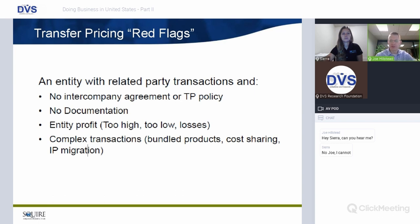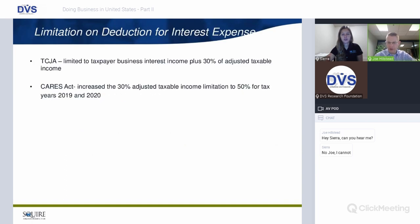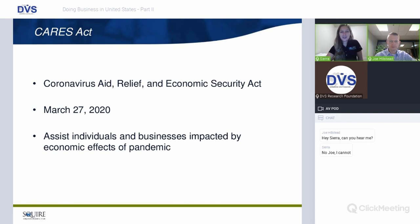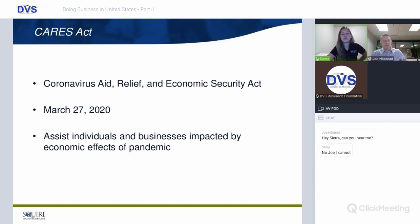In the interest of time, we're going to skip the detailed GILTI, BEAT, and CFC sections and move to Sierra's presentation on coronavirus legislation. The CARES Act — Coronavirus Aid, Relief and Economic Security Act — was passed on March 27th, 2020 by President Trump. Its purpose was to assist individuals and businesses impacted by the economic effects of the pandemic.